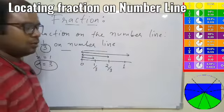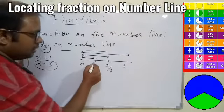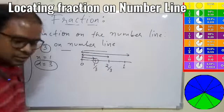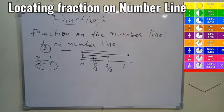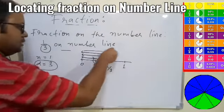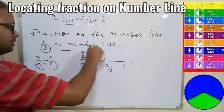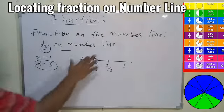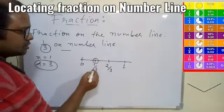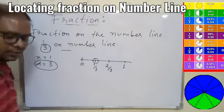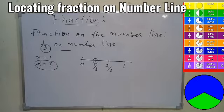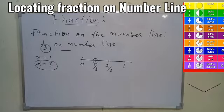3/3 equals 1, so we don't need to write it separately. This is 1/3, this is 2/3, and this is 3/3 which is also equal to 1. Finally, circle the location of 1/3 on the number line. I hope you understood. Let's take one more example for more clarity.